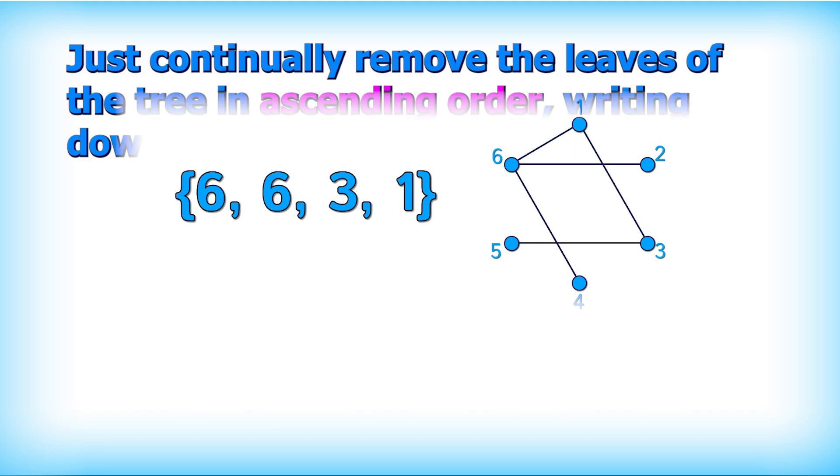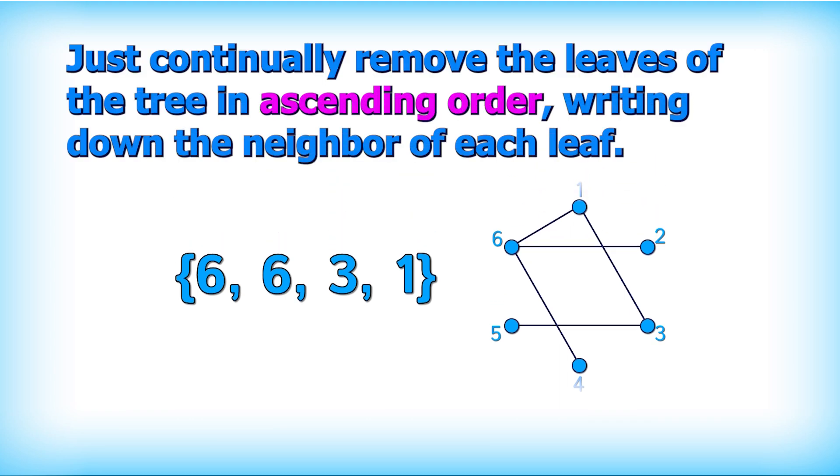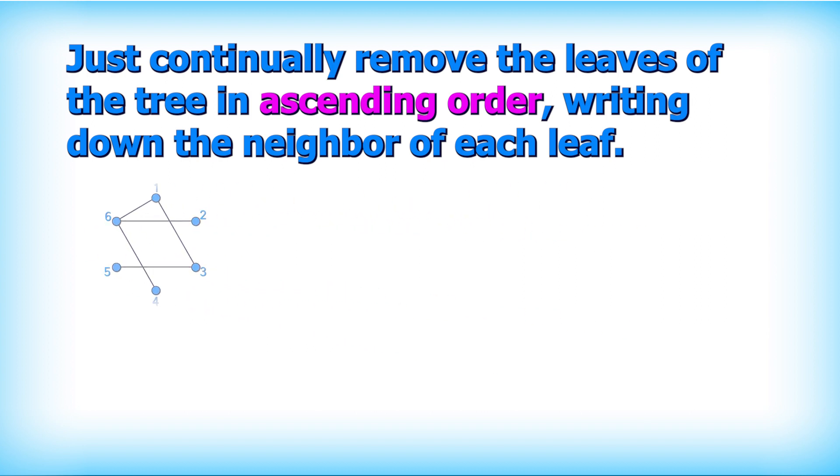Basically, the idea will be to just continually remove each of the leaves of the tree in ascending order and write down the vertices that they were connected to. A leaf means just a vertex with degree 1. So in our example, the smallest leaf would be 2. So we start by removing that and writing down the vertex it's connected to.